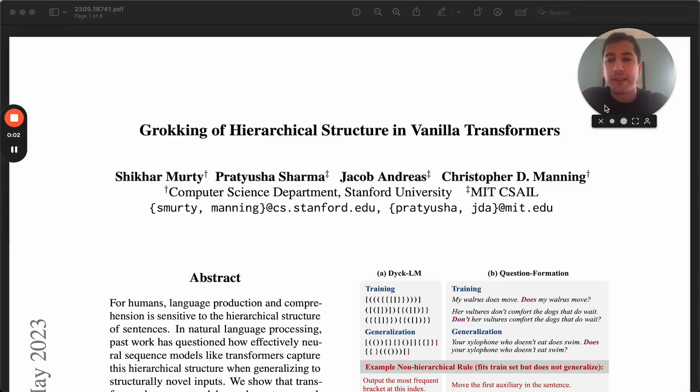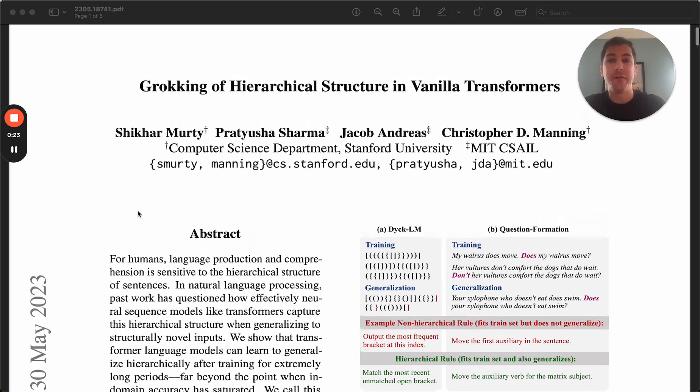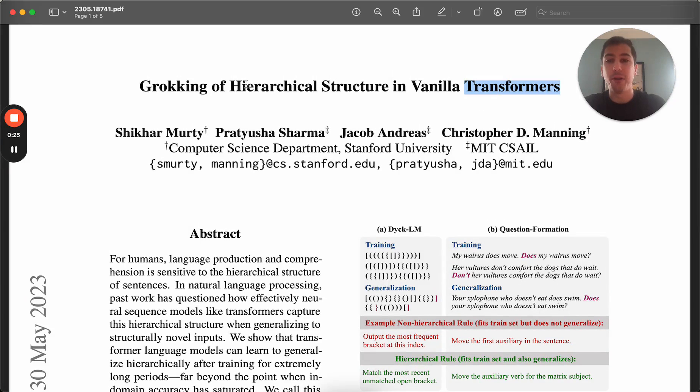Today I'm looking at this paper, Grokking of Hierarchical Structure in Vanilla Transformers. It's out of Stanford and MIT, in particular by Dr. Christopher Manning, who's one of the authors I follow quite often. This paper was written back in May of 2023, and it's focusing on this idea of can a transformer model figure out and generalize structure in language beyond the training data set that it looks at?